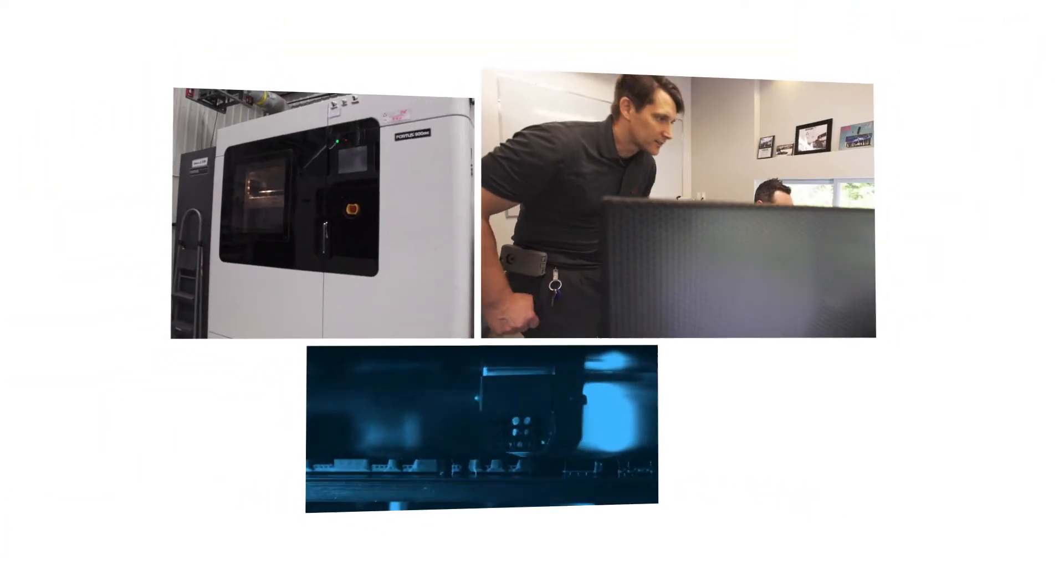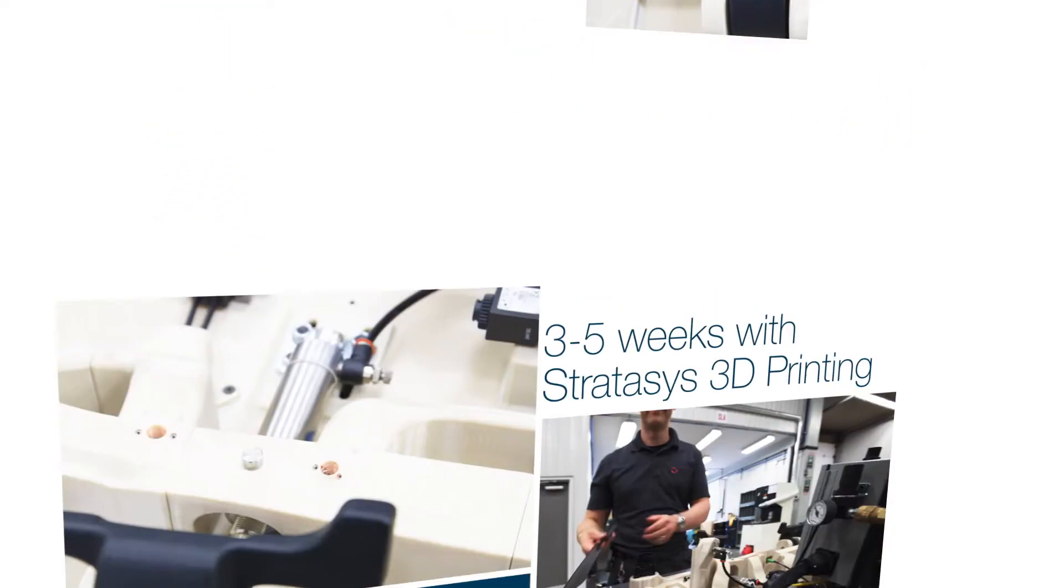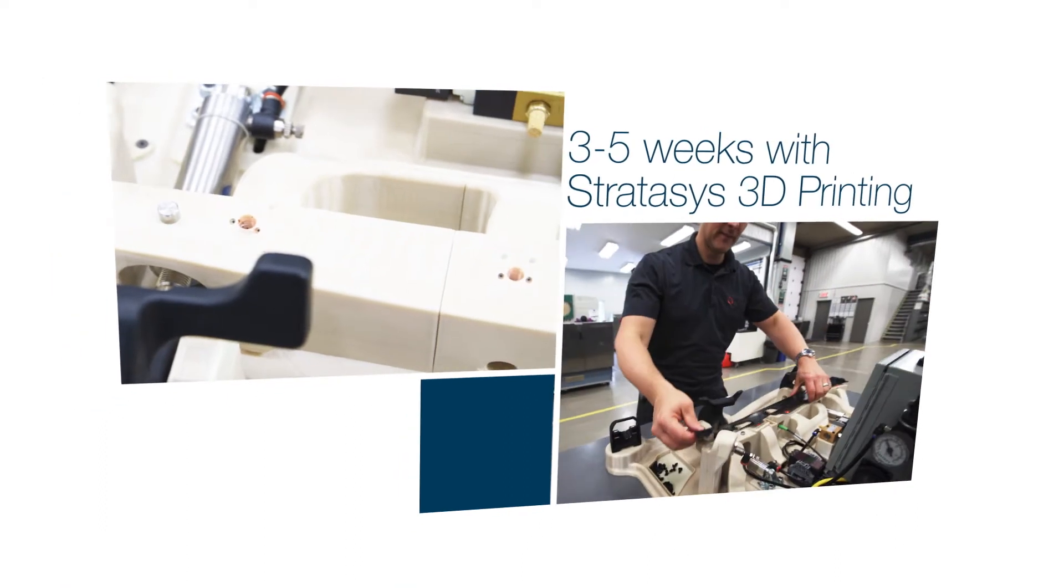Stratasys 3D printing really helped us speed up everything. Normally they get these jigs that are traditionally made with other types of machining in 16 to 20 weeks. We managed to do all this with Stratasys 3D printing in three to five weeks. Everything was to speed up production.